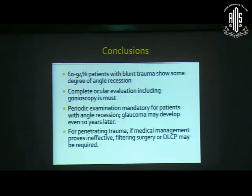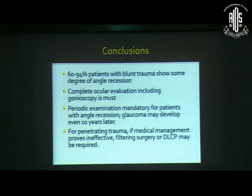To conclude: 60 to 94% of patients with blunt trauma show some degree of angle recession. In cases of blunt trauma, a complete ocular evaluation including gonioscopy is mandatory. Periodic examination is mandatory in patients harboring angle recession on gonioscopy, as glaucoma may develop even 10 years later. For penetrating trauma, if medical management proves ineffective, filtering surgery, tubes, or DLCP may be required.